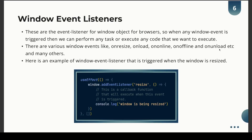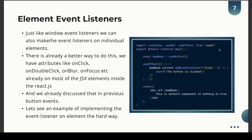Just like window event listeners, we can also add event listeners on individual elements. We create a useRef hook, assign it to a particular element, and then use the event listener on that ref's current value. However, we don't always need to do this, because common events like onClick, onBlur, and onFocus are already defined on JSX elements — so you can use them directly as JSX attributes.